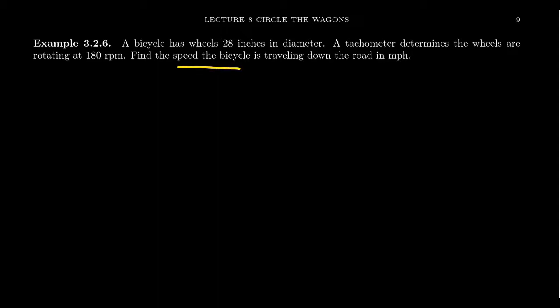We want to find the speed of the bicycle. Well, there's two types of speeds we're talking about. There's linear speed and there's angular speed. That's why it tells us the speed down the road. This thing is looking for the linear velocity. We need to find V and we need to do it in miles per hour.